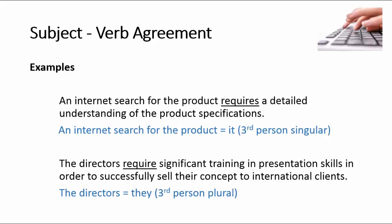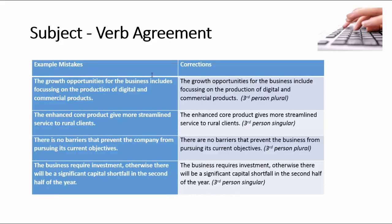Let's now look at some example mistakes and look at the corrections. In the first example: 'The growth opportunities for the business includes focusing on the production of digital and commercial products.' Clearly there's a mistake here — we shouldn't use 'includes,' we should use 'include.' The subject, 'the growth opportunities for the business,' is a plural subject, third person plural. Therefore, to make the verb agree, we need to use 'include.'